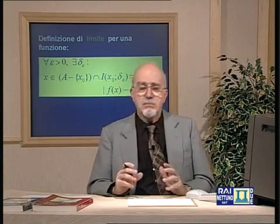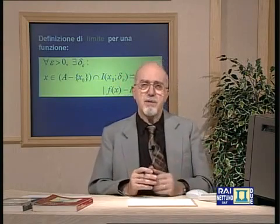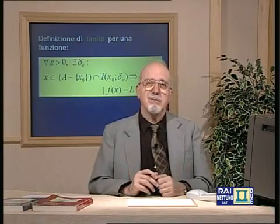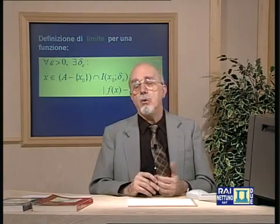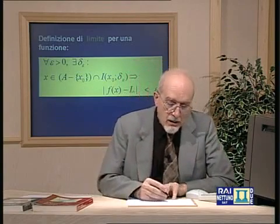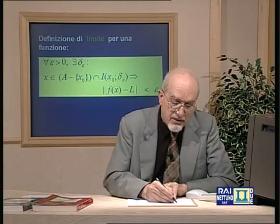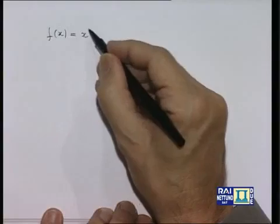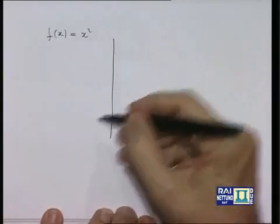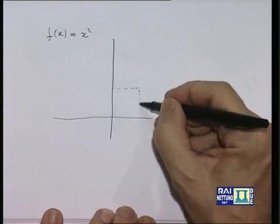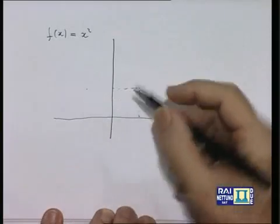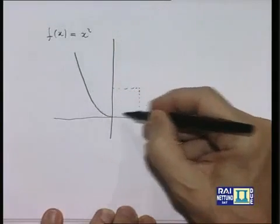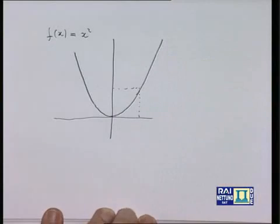Prima di leggere la definizione formale, è bene premettere un esempio. Consideriamo la funzione f(x) = x². Il suo grafico è una parabola che passa per (−1, 1), per l'origine e per (1, 1). Prendiamo x₀ = 1 e un secondo punto x distinto da 1. Sulla parabola abbiamo il punto (1, 1) e il punto (x, x²), e possiamo considerare la retta secante che passa per questi due punti.